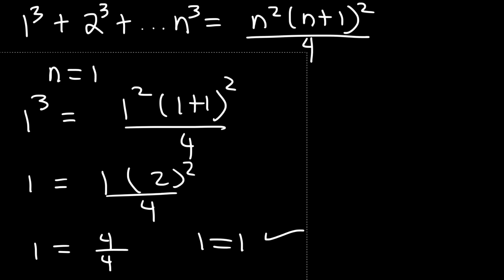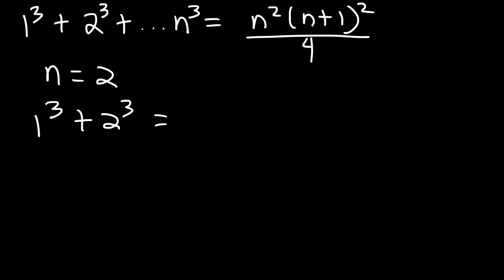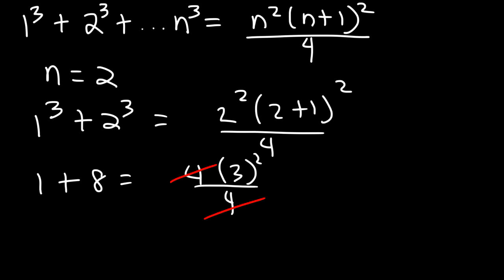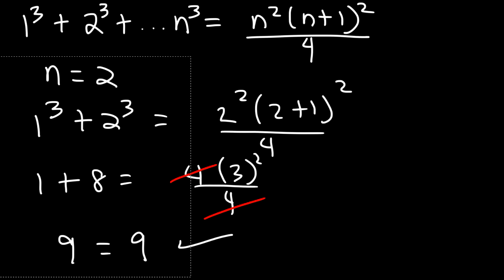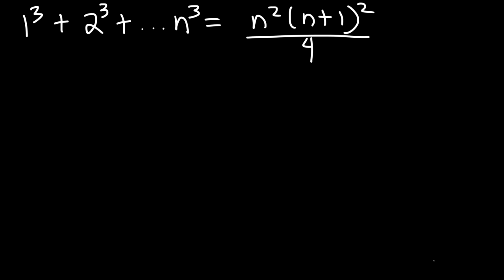Now let's try n equals 2. We need the sum of the first two terms: 1 to the 3rd plus 2 to the 3rd, and that has to equal 2 squared times 2 plus 1 squared over 4. 1 to the 3rd is 1. 2 to the 3rd is 8. 2 squared is 4. 2 plus 1 is 3. 4 divided by 4 is 1, so we can cancel that. 1 plus 8 is 9. 3 squared is 9. So it's true for the 2nd term. You can test out the 3rd term if you want to, but this is enough for now.